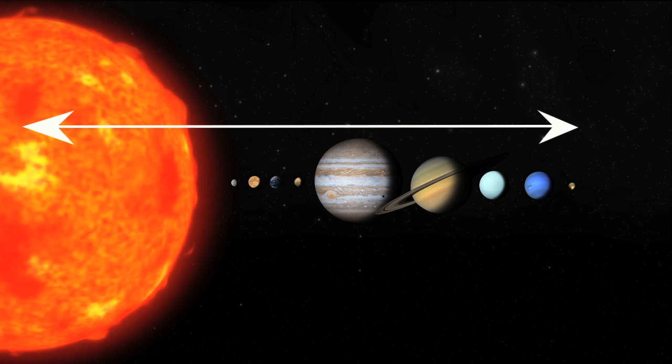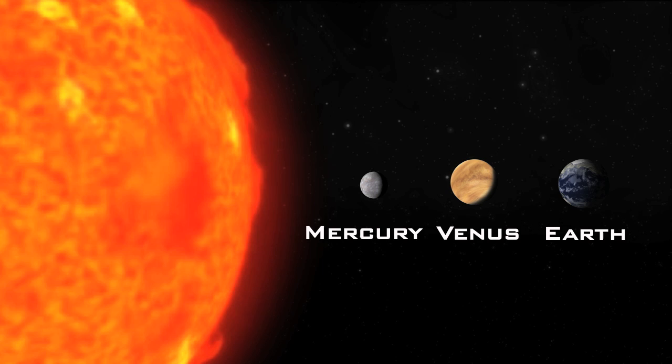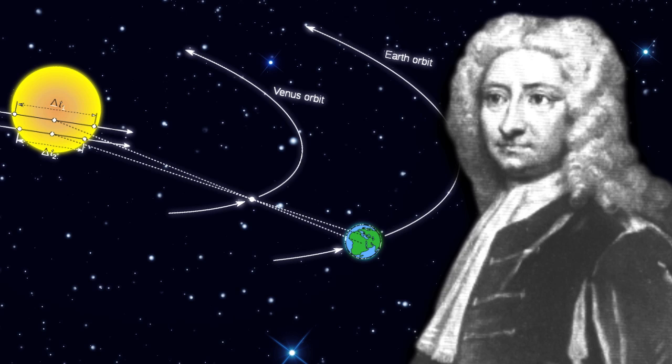Halley believed this technique of parallax would work for Venus because of its larger size and because Venus is closer to Earth than Mercury. His prediction was that the results would have an error of just 1%.